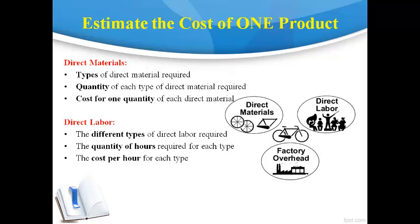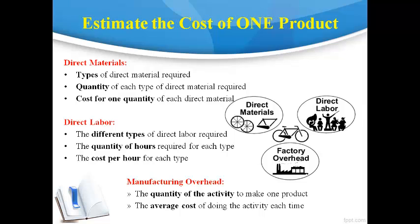Each type of direct labor with different skills will have a different cost per hour. Manufacturing overhead is required also to make the product. Manufacturing overhead is the cost of manufacturing facilities and manufacturing management. It is incurred to produce all of the products and it is not possible to determine how much it costs to make just one. The cost for one product for manufacturing overhead must be estimated using an activity that occurs during the production process that is the main cause of the manufacturing overhead cost.